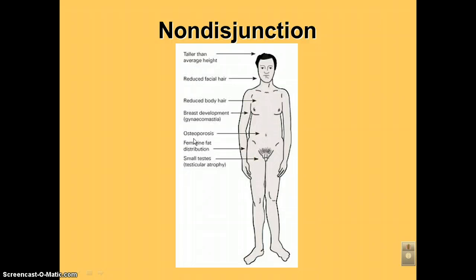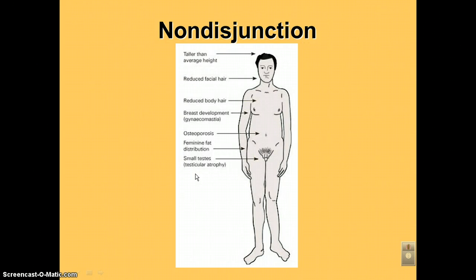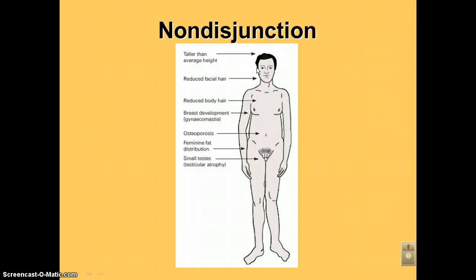Males with Klinefelter syndrome show feminine fat distribution, storing more fat in the hips, and are prone to osteoporosis, which is typically an older female condition. Their sex organs are not as developed as they should be, so they'll have difficulty producing children. They also tend not to need to shave and won't have much chest hair. If you have any questions, see your teacher — that concludes all the podcasts for this chapter.